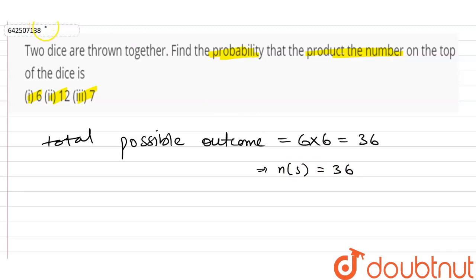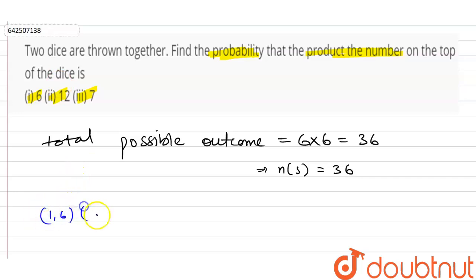In the first part, we need to find the probability such that the product of the numbers on the top of the dice is 6. The possible combinations are (1,6) or (6,1), or (2,3) or (3,2).